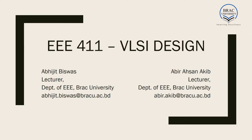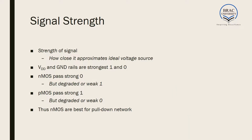Hello everyone. In this lecture we will be learning about pass transistors and tri-state buffers. Before we move to transmission gates, let us look at our CMOS circuits for a moment. We know CMOS circuits are composed of two parts: one is called the pull-up network composed of PMOS, and the other is the pull-down network composed of NMOS.